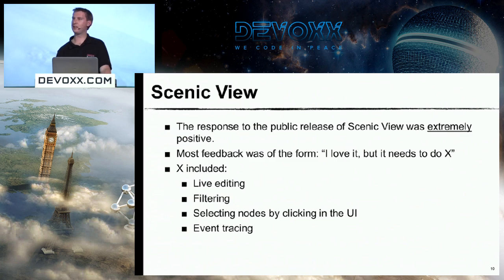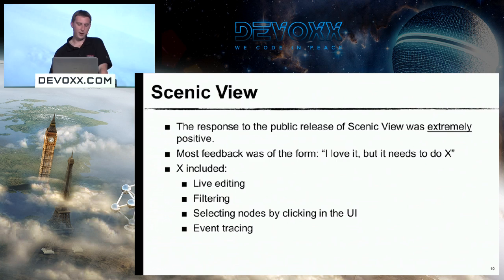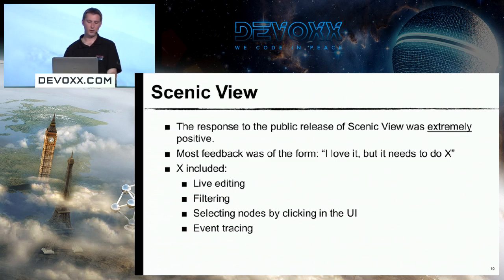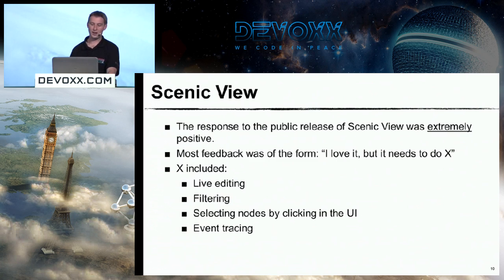We had a lot of feedback from people saying they really liked Scenic View but wishing it would do more. The most requested features were live editing — so you could edit the layout position within Scenic View and have it reflected dynamically in the user interface — the ability to filter properties or the SceneGraph to find what you're looking for, the ability to do what you'd do in Firebug where you move your mouse around the application and see properties of the hovered node, and event tracing where you can track what events are going through your system as you move your mouse or click around. We're always on the lookout for more feedback and feature requests, so feel free to email me.